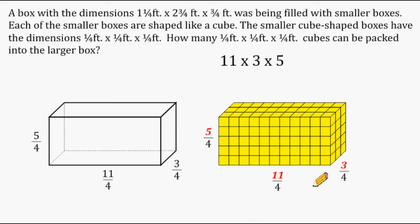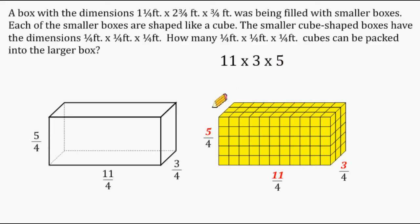Now we know we have three boxes stacked in one direction, eleven in another, and five in the height direction. All we have to do is multiply eleven by three, then multiply that product by five. These numbers are just the numerators of our improper fractions, telling us how many boxes fit in each of the three dimensions. Multiplying all three gives us 165 cubes.